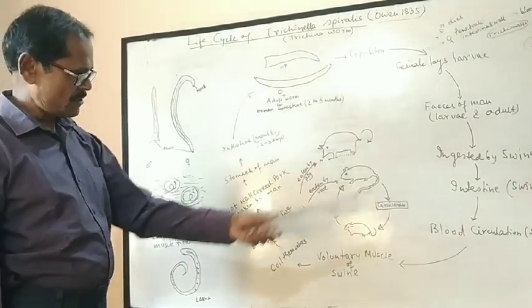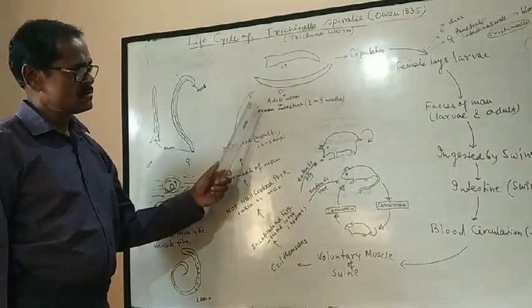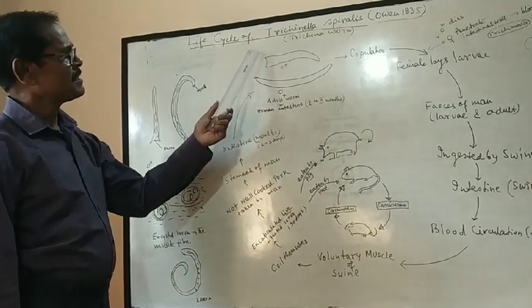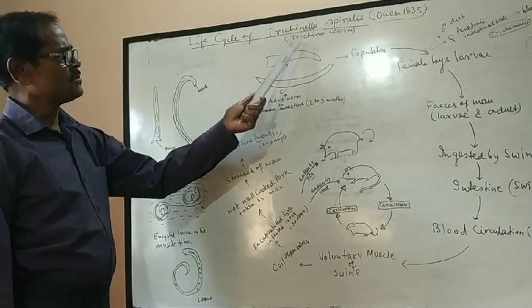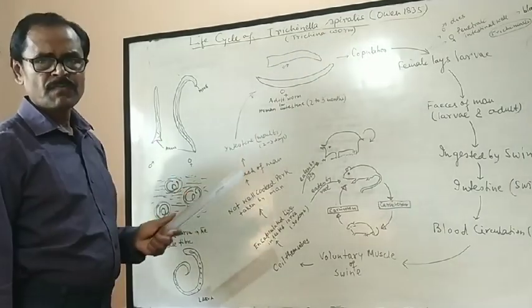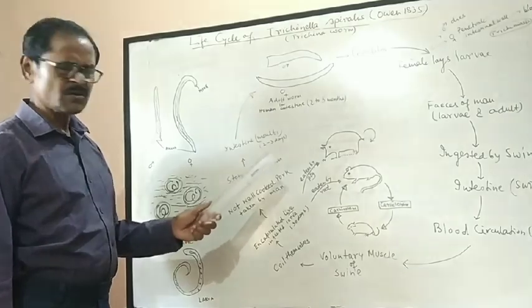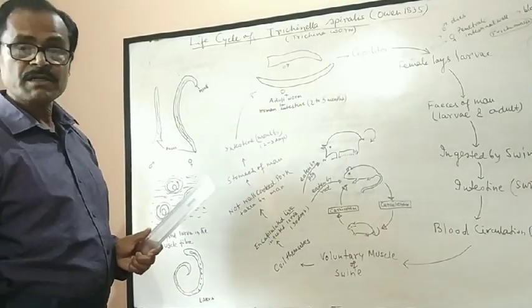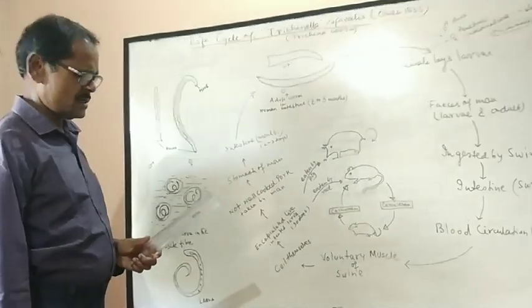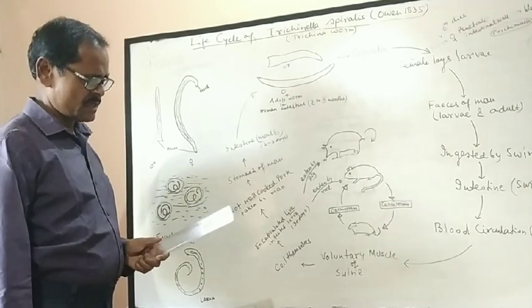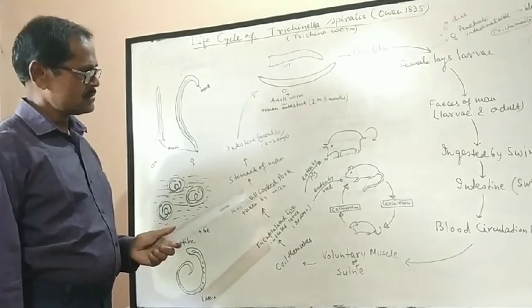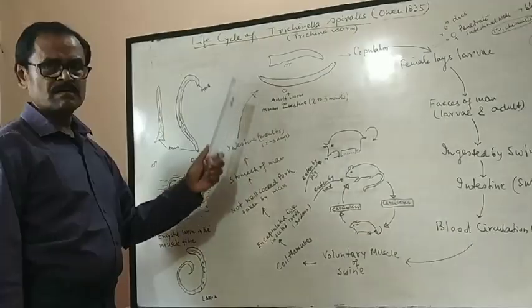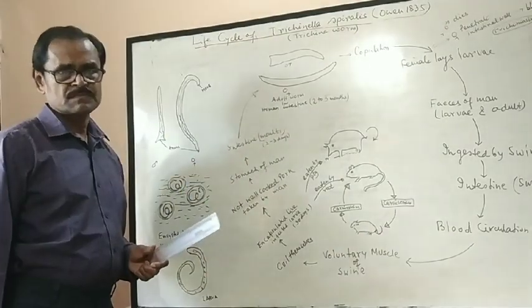So this is the whole life cycle of Trichinella spiralis, commonly known as Trichina worm. This is not so commonly recorded in India, but it is very common in European countries and USA. Thank you.